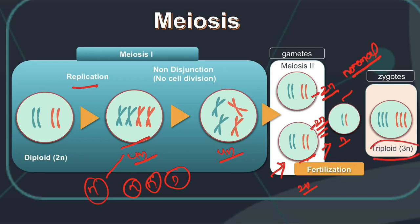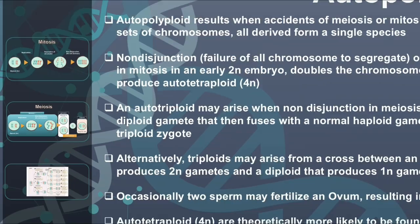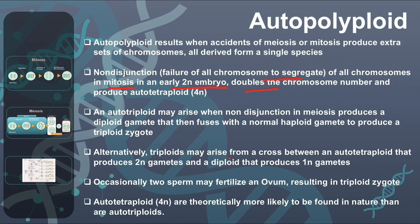If a 2n gamete and an n gamete fuse, the resulting zygote is triploid — meaning 3 copies of the total chromosome set are present. Alternatively, triploids may arise from a cross between an auto-tetraploid that produces 2n gametes and a diploid that produces 1n gametes.